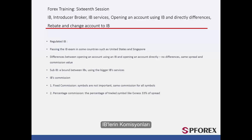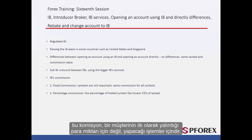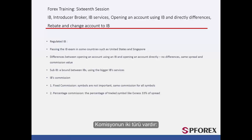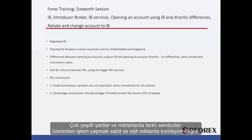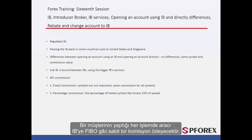Every IB receives a commission for every client introduced to the broker, and this commission is for the trades that a client makes, not for the amount they initially deposit. This commission has two types. The first is fixed commission: trading on different symbols in various conditions and amounts provides a fixed and equal amount of commission. Any trade that a client makes, the broker will pay a fixed commission to the IB, such as with FIBO.